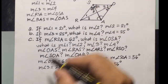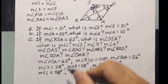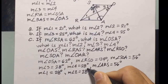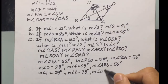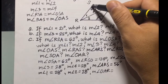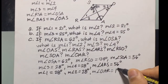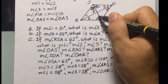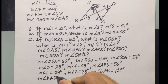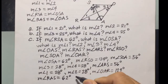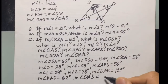Since angle ARS is 56 degrees, measure of angle 1 equals 56 divided by 2, which is 28 degrees, and measure of angle 2 will also be 28 degrees. Measure of angle OAR is the same as measure of angle RSO, so measure of angle OAR is 124 degrees. And measure of angle RSO equals 62 degrees, and measure of angle OAR will also equal 62 degrees.